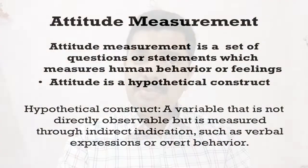Attitude measurement is a set of questions or statements which measures human behaviors or feelings. It is also called a hypothetical construct because it is very hypothetical and abstract — you cannot very clearly or precisely describe attitude. A hypothetical construct is a variable that is not directly observable but is measured through indirect indications such as verbal expressions or overt behavior.